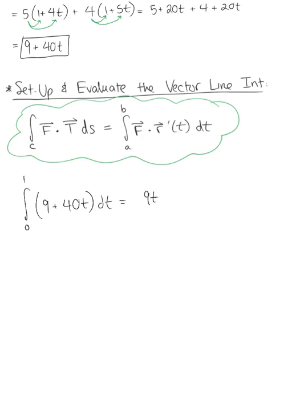So this integrates to 9t plus 20t² evaluated from 0 to 1. When we evaluate, we have 9 times 1 plus 20 times 1². When we substitute 0 everything cancels. So we have 9 plus 20 for a final answer of 29.